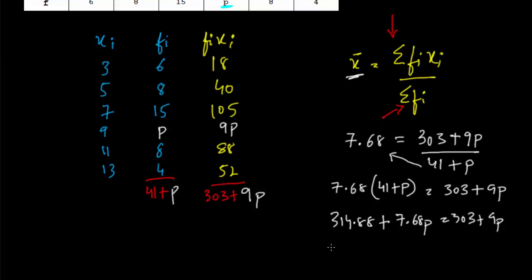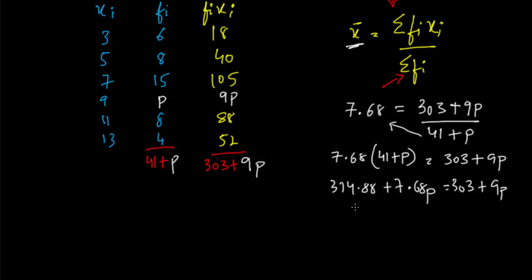So when plus 9p comes this side it's minus 9p plus 7.68p equals 303 minus 314.88. Since there is a minus symbol we subtract. That gives negative 1.32p. Similarly on the right hand side we subtract, that's negative 11.88.